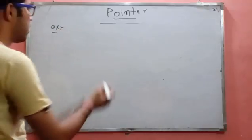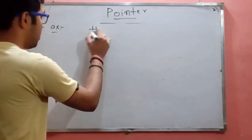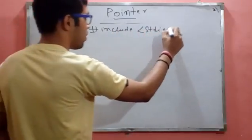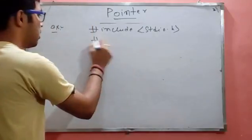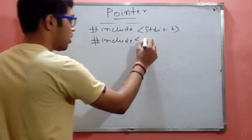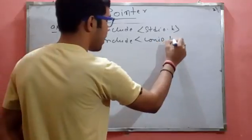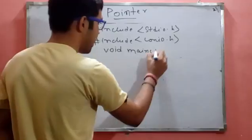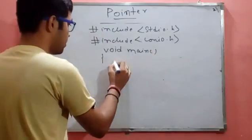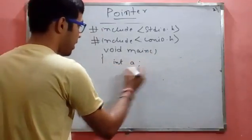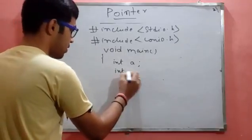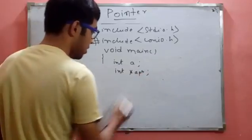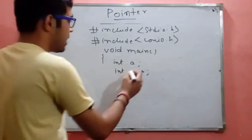Let's look at an example. We have #include stdio.h and #include conio.h, then void main(). Inside main, we declare int a, and then int *a_ptr — this is a pointer declaration using the asterisk operator.